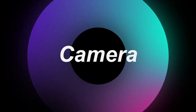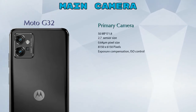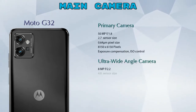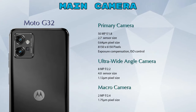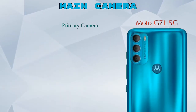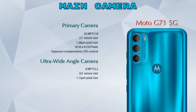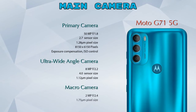Now let's see the details about our favorite feature — the camera. Talking about the rear camera, the G32 has three cameras: a primary camera, an ultra-wide angle camera, and a macro camera. The G71 5G also has three cameras: a primary camera, an ultra-wide angle camera, and a macro camera.